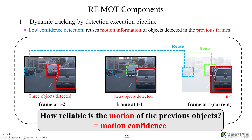How reliable is the motion of the previous object? We define that as motion confidence. An object detected at frame t is fresh, so its motion confidence is very high. But if an object was last detected at frame t-2 and not detected at t-1 or t, its motion confidence is very low. That is the definition of motion confidence in our approach.